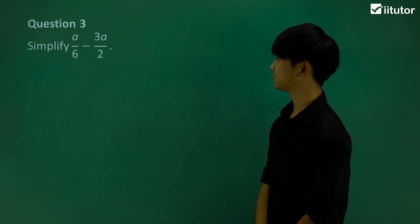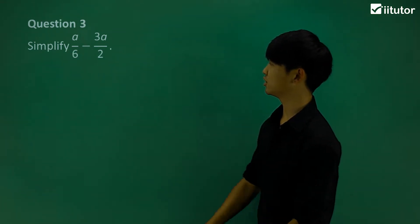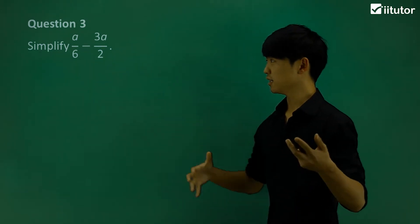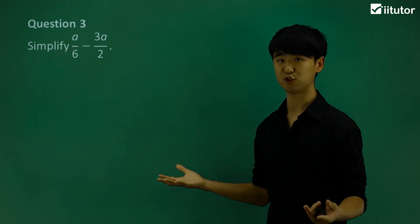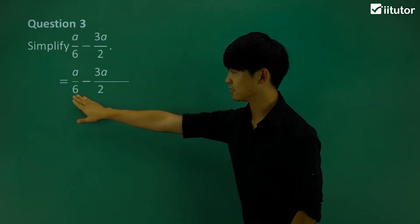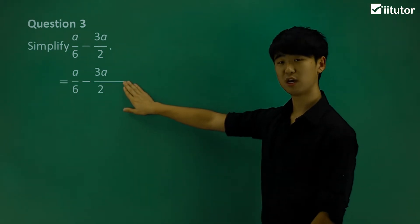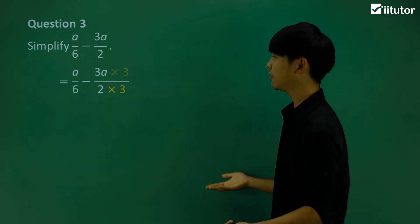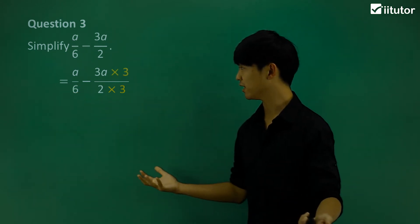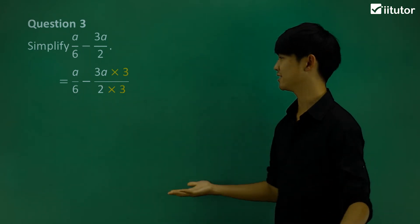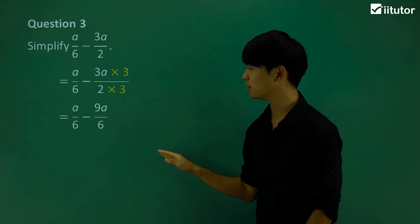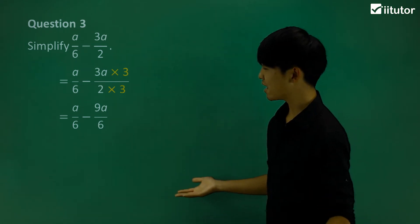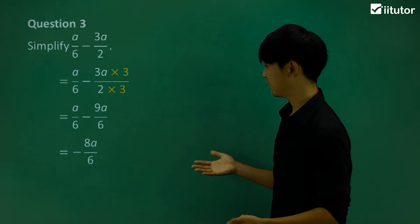Now let's move on to question number 3. We have to simplify the expression a over 6 take away 3 over 2. We have a minus sign now, but nothing changes — we're still going to use the same method of getting the same denominator. I'm going to leave my a over 6, but change the other fraction by multiplying the denominator and numerator both by 3. Now we do have the same denominator of 6, which means I can put it in one fraction. So a over 6 take away 9a over 6 is negative 8a over 6.